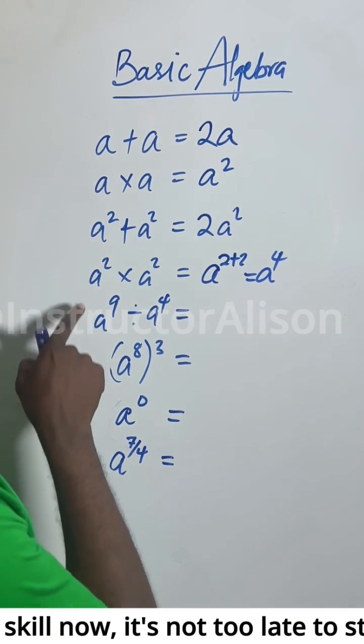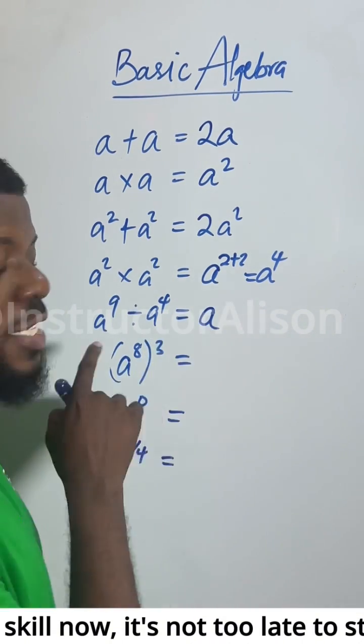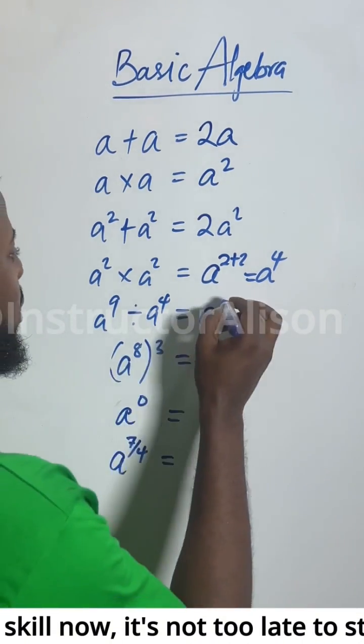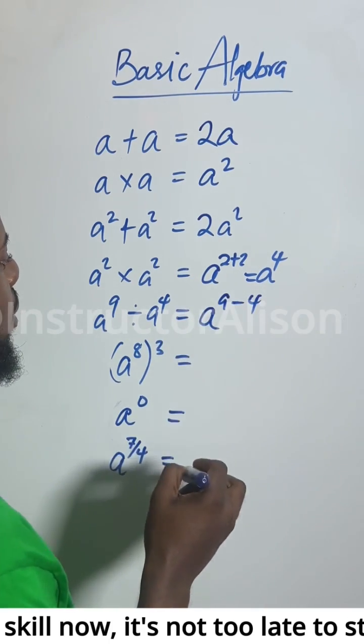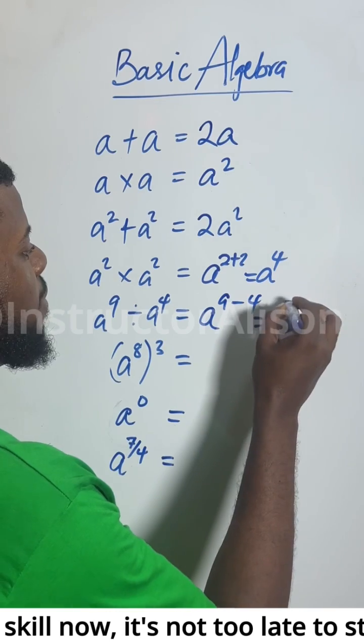And the next one is A to the power of 9 divided by A to the power of 4. Because the base are the same, take one of the base. This is the division law of indices. And then you subtract the powers. So 9 minus 4, that would be 5. So we have the result A to the power of 5.